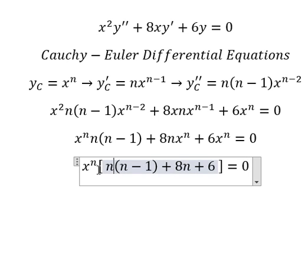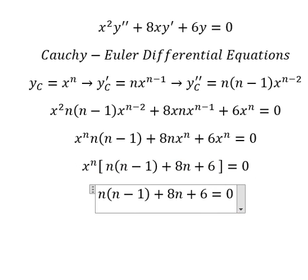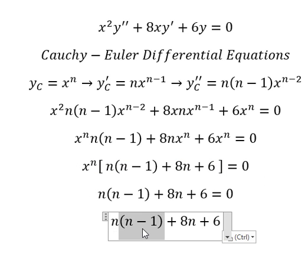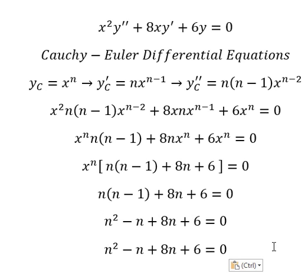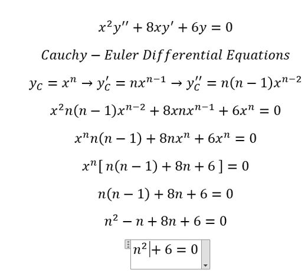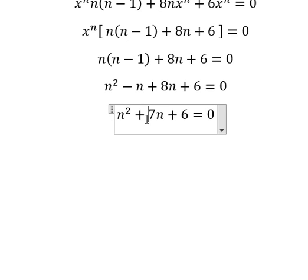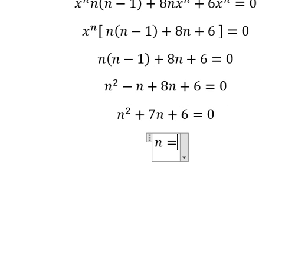After factoring out x to the power of n, we solve the characteristic equation. We get n squared minus n plus 8n minus n, which simplifies to give roots n equals negative 1 and n equals negative 6.